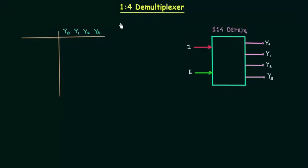In the last presentation we completed 1 is to 2 dmux. In this lecture we will study 1 is to 4 dmux.